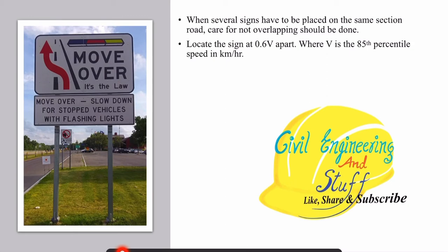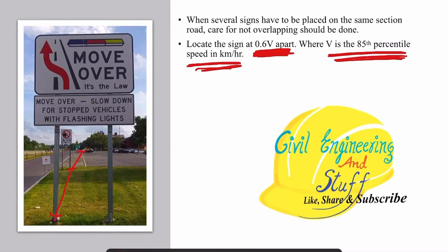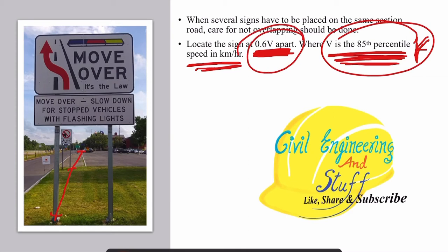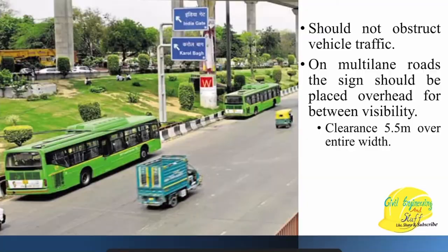In a road section where multiple signs are installed, the distance between traffic signs is 0.6V, where V is the 85th percentile speed. The traffic signs will be 0.6V apart. We have discussed about the 85th percentile speed previously — you can refer to that video for more information. That is how the distance between traffic signs is decided.